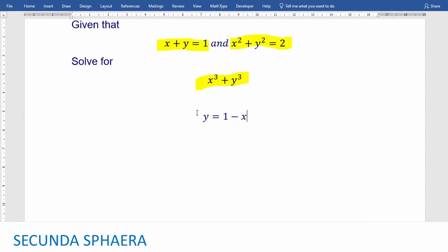And now we can plug that into the second equation. And that gives us that x squared plus 1 minus x squared is going to be equal to 2. And now we can expand the left side of this equation.